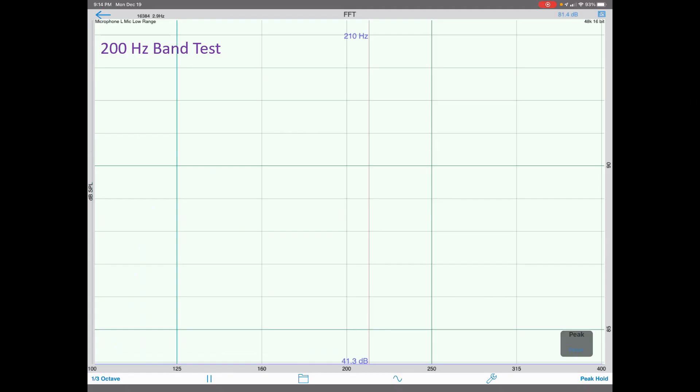Here's a sweep test for the 200 Hz band. The 200 Hz slider is on max boost while the others are centered. The cursors can be used to find the frequencies at the minus 3 dB points, and then the Q can be calculated from that.